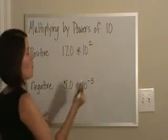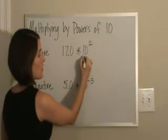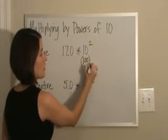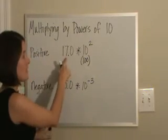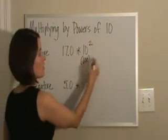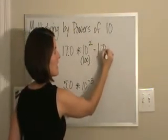First, I know that 10 to the second power is the same thing as 100. 17 times 100 is 1700.